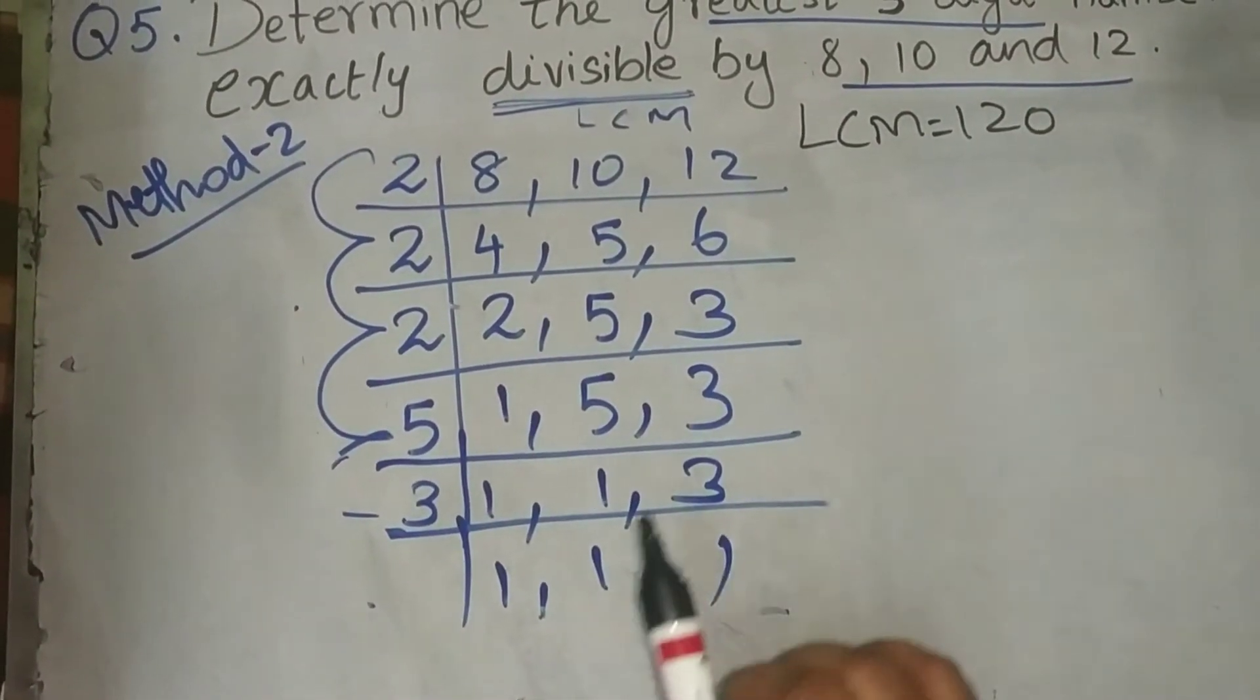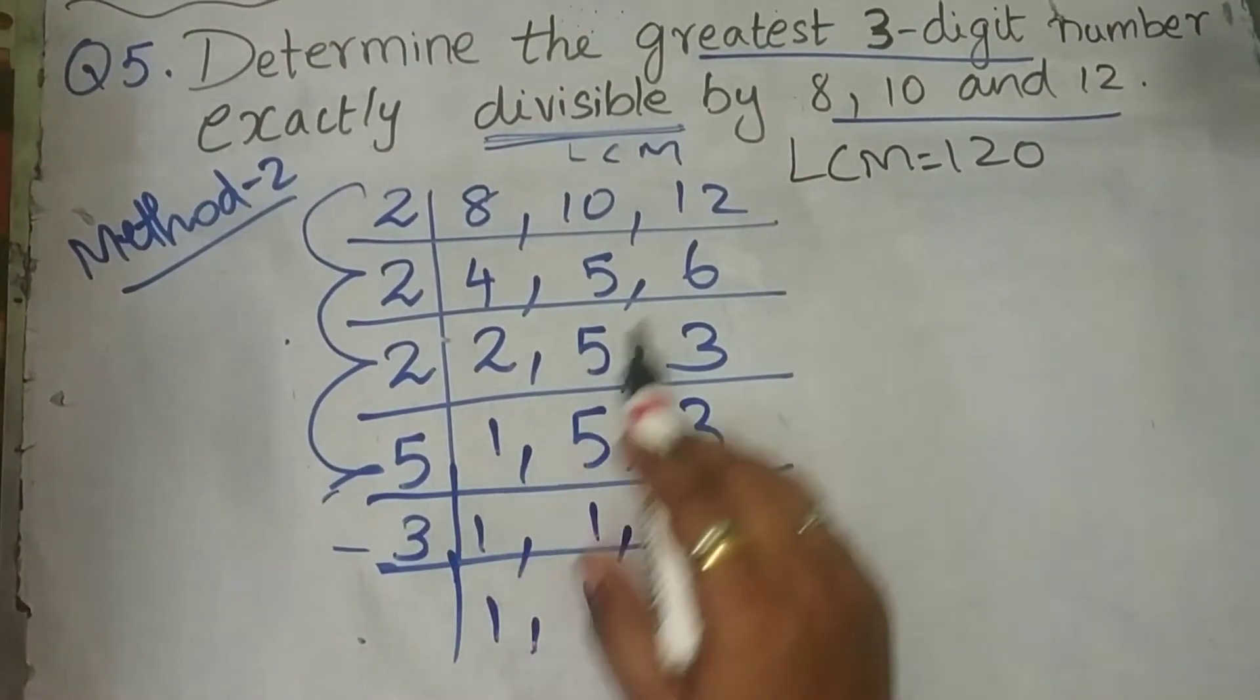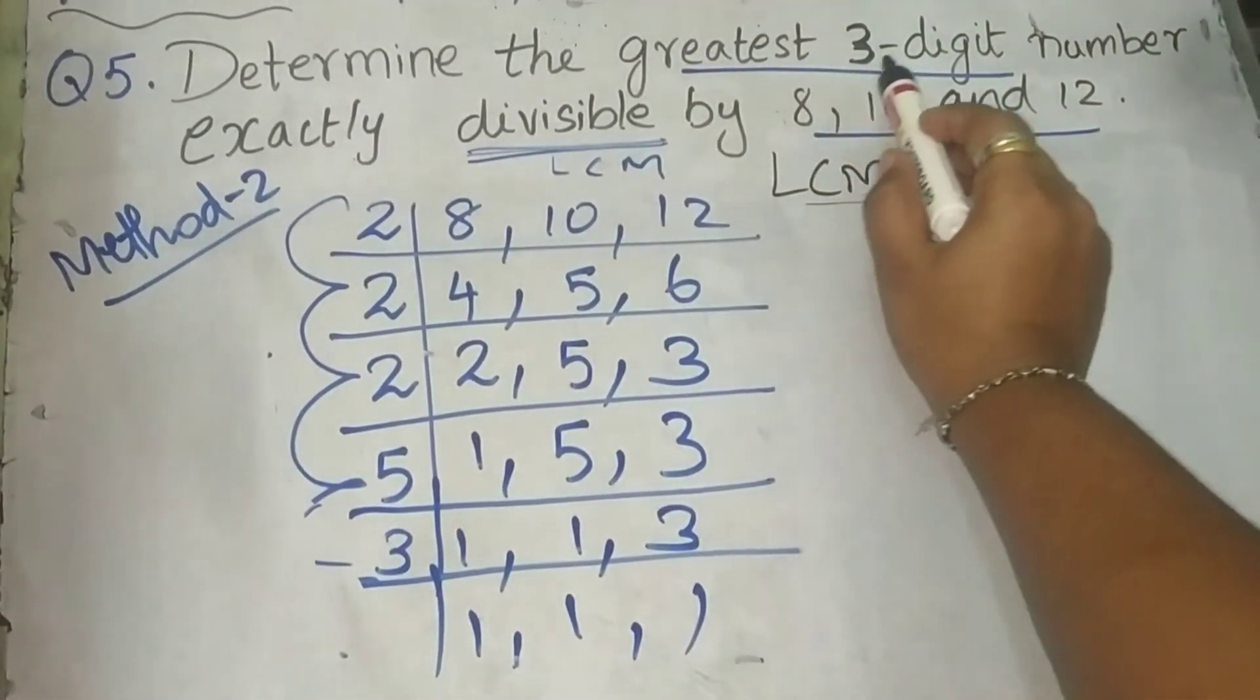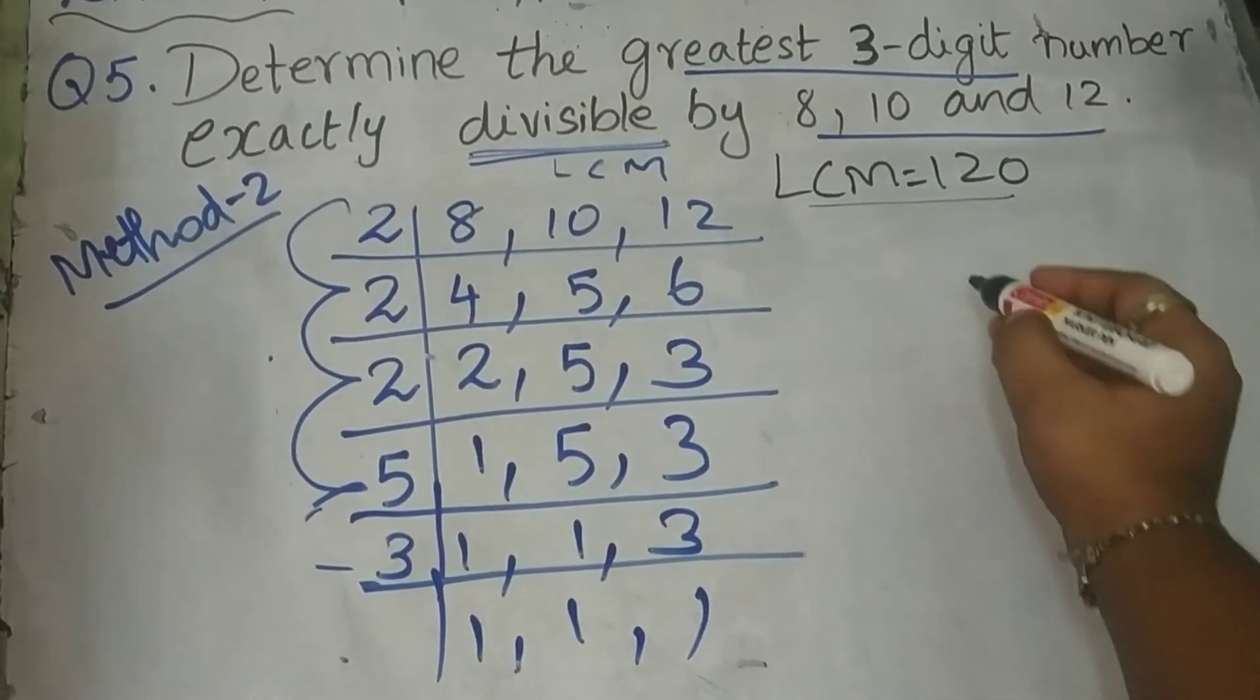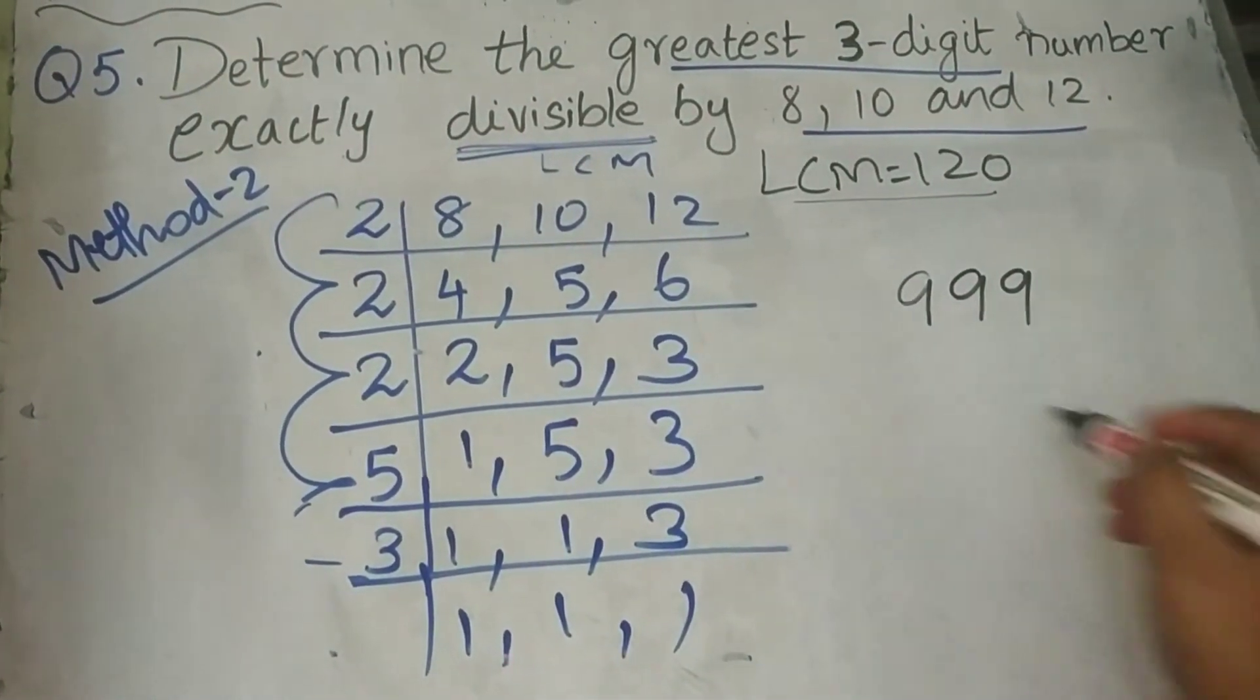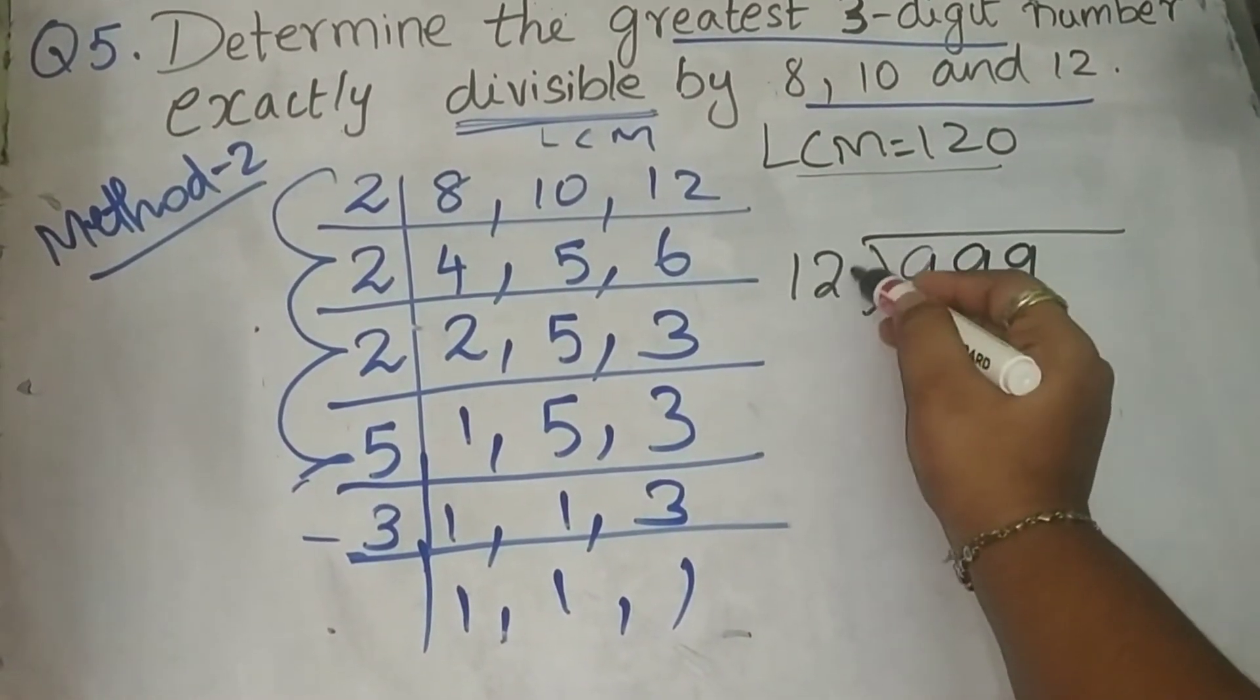Now, we will see the method 2. So, method 2, what we have to do? As usual, we will find the LCM. So LCM is 120. Next, what we have to do? Greatest 3 digit number, they have asked. So, we all know greatest 3 digit number is 999. Next step, with whatever the LCM we got, we should divide it.